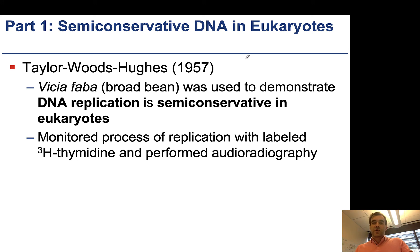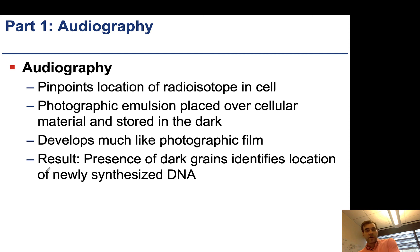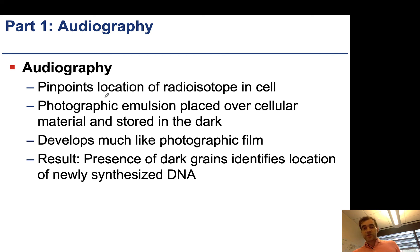Another way that people have looked at this was in eukaryotes. This is the Taylor-Woods-Hughes experiment. They looked in Vicia faba — broad bean — which was used to demonstrate that DNA replication is also semi-conservative in eukaryotes. They used radioactivity and monitored the process of replication with labeled H3-thymidine and performed autoradiography. This is a hydrogen isotope, and autoradiography pinpoints the location of a radioisotope in the cell. A photographic emulsion is placed over cellular material, stored in the dark, and it develops almost like photographic film — instead of light exposing the film, the radioactivity exposes the film. The presence of a dark grain indicates the location of newly synthesized DNA.